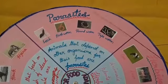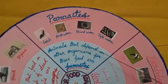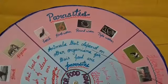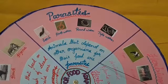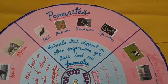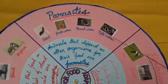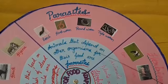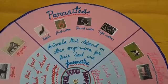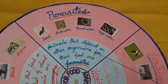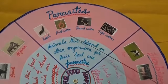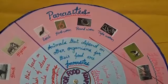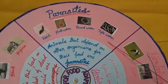Parasites. Animals that depend on other organisms for their food are called parasites. These organisms depend on other organisms for their survival. Examples are leech, hookworm, roundworm, and tapeworm.